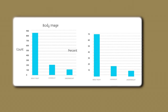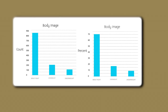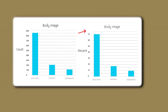In the first bar chart, the height of the bars is measured on the Y or vertical axis as the number or count of college students giving each response. The second bar chart shows the same data but as a percentage of the total sample. A bar chart helps us display the distribution of a categorical variable — for example, the percentage of observations in each category.